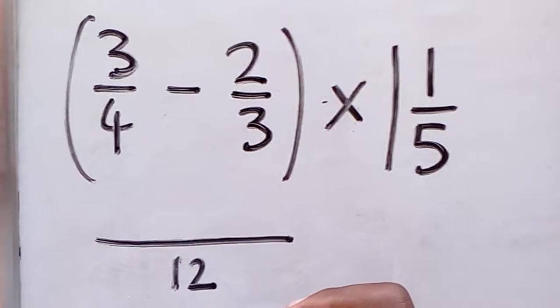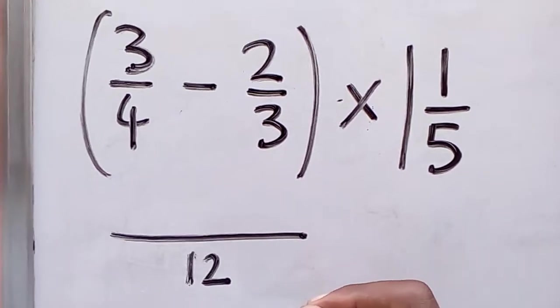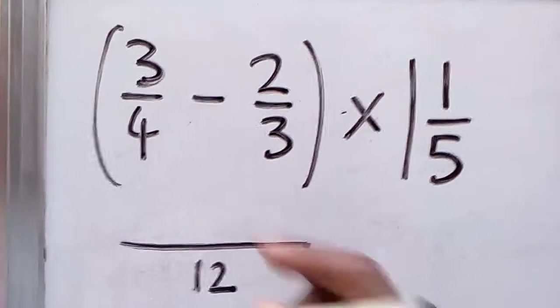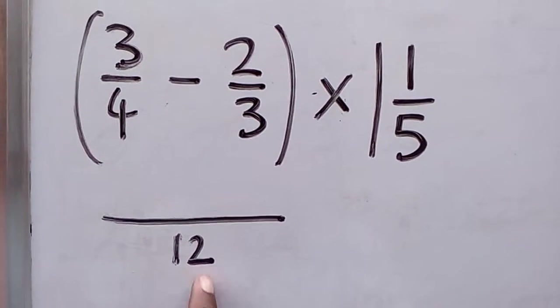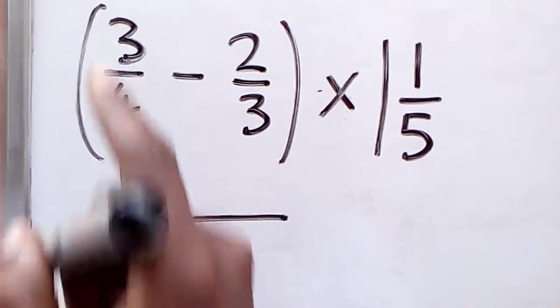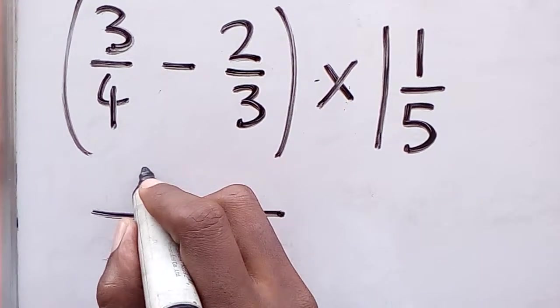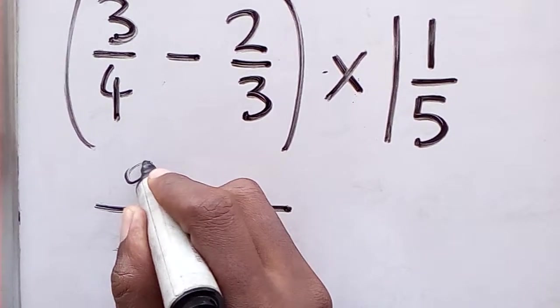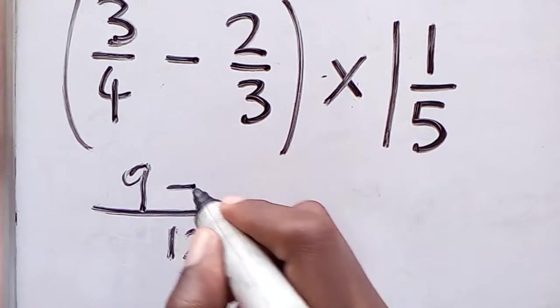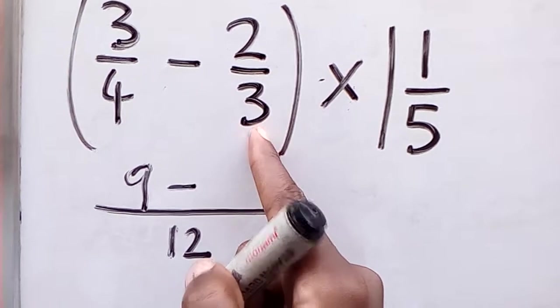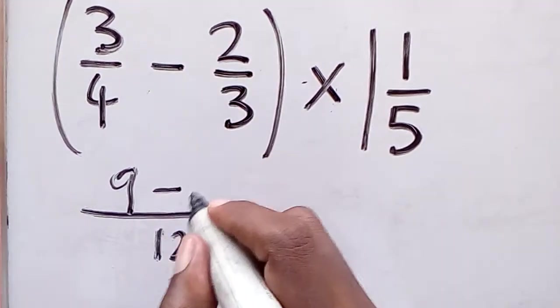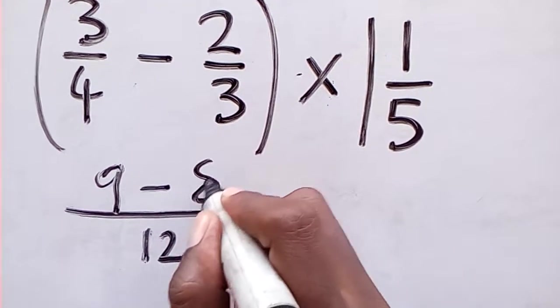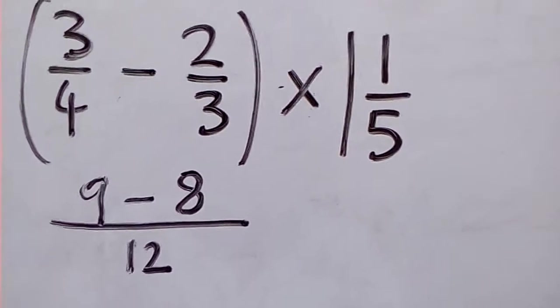Let's proceed. Four into twelve is three, three times three is nine. Next, three into twelve is four, four times two is eight.